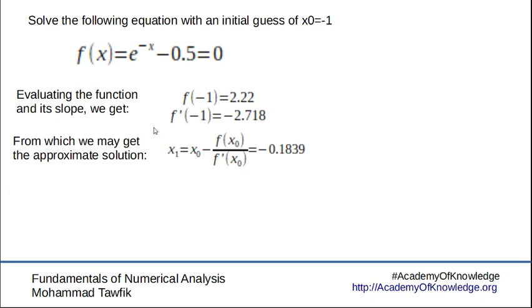Now to find the second guess or the first evaluation will be the initial guess minus f over f prime, and that will give us minus 0.183. Now we use it again, repeating the same process.